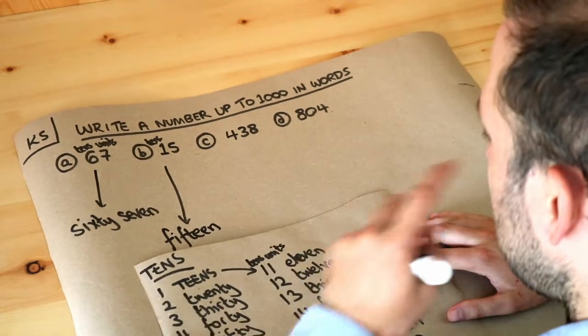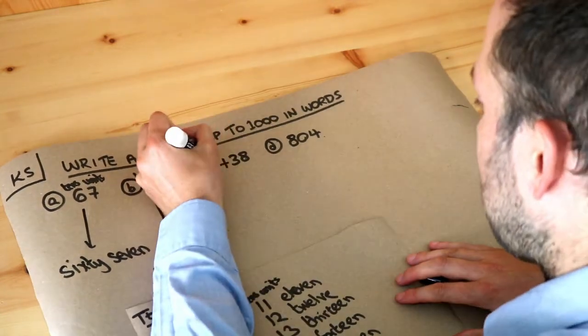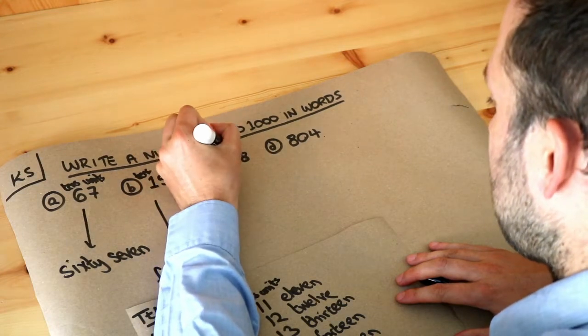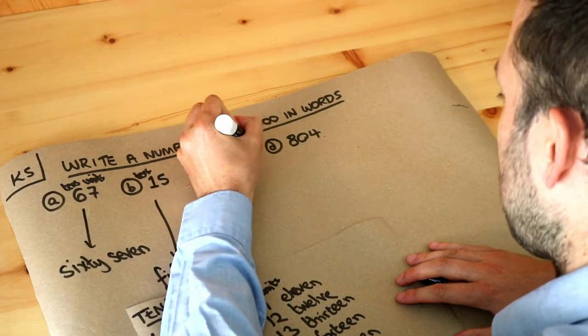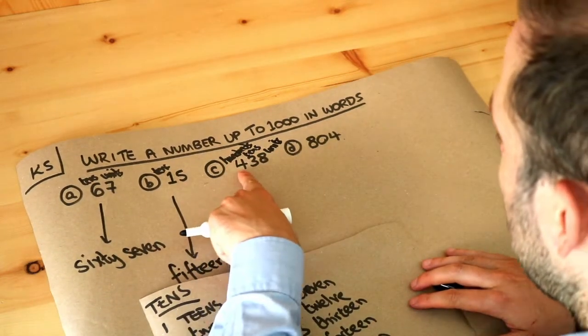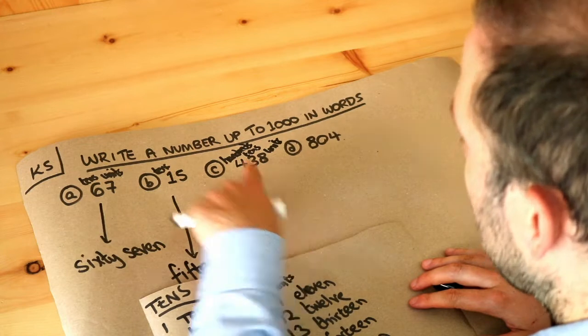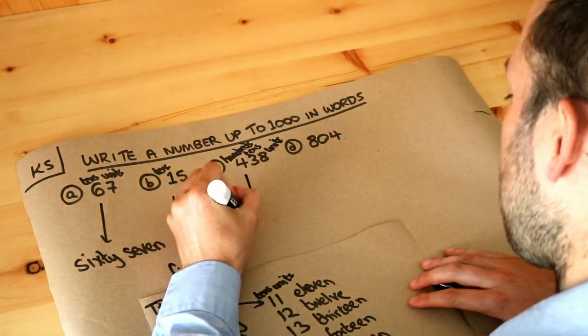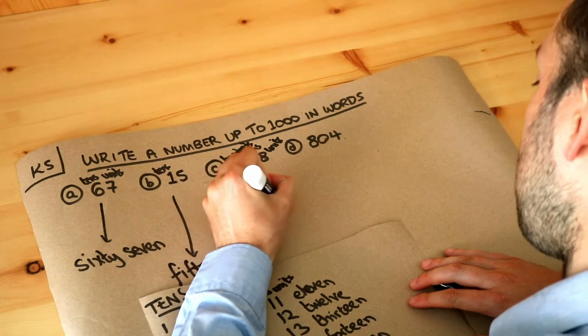What about the next one? We've got a hundreds digit now. So this is the hundreds digit, and then you've got the tens digit, and then the units digit. So let's think about the hundreds digit first. It's four. Now there's no special way of saying it, we just say it as four hundred and.